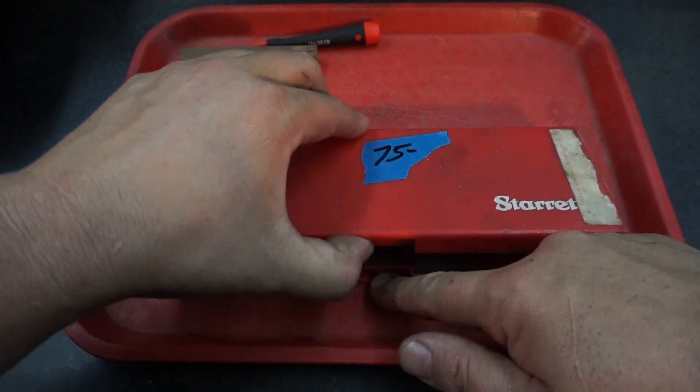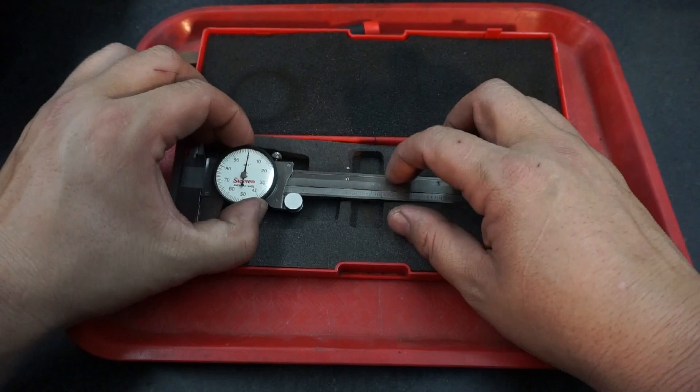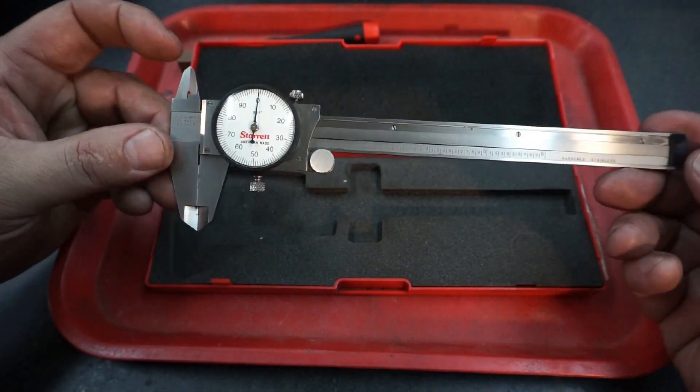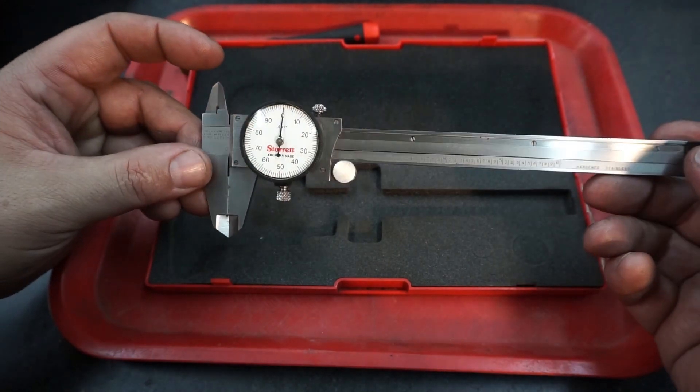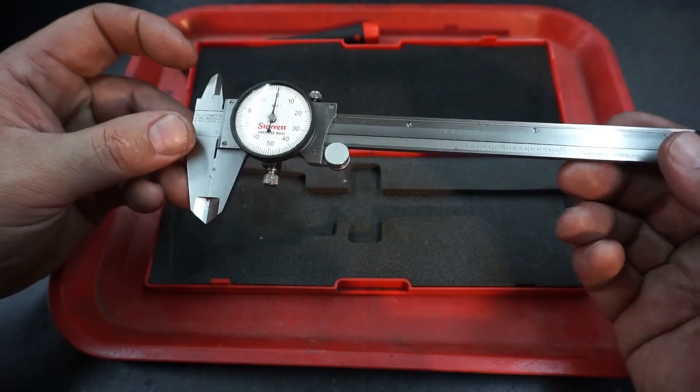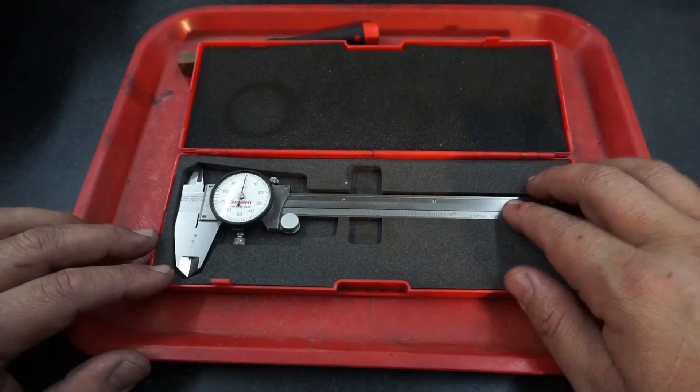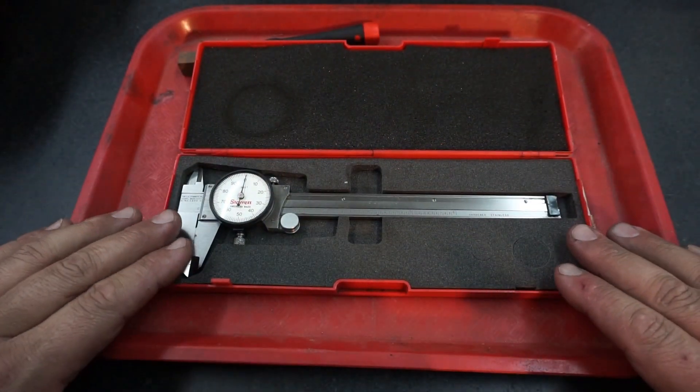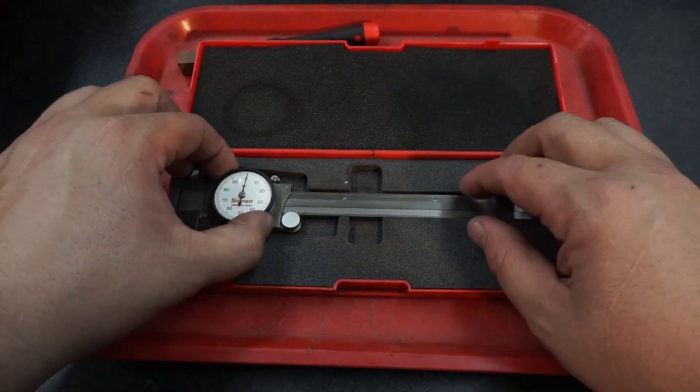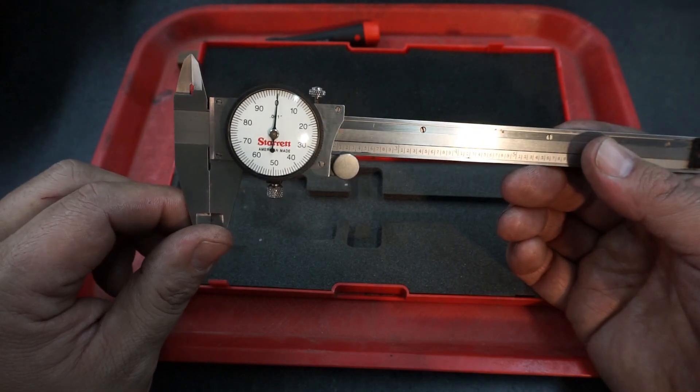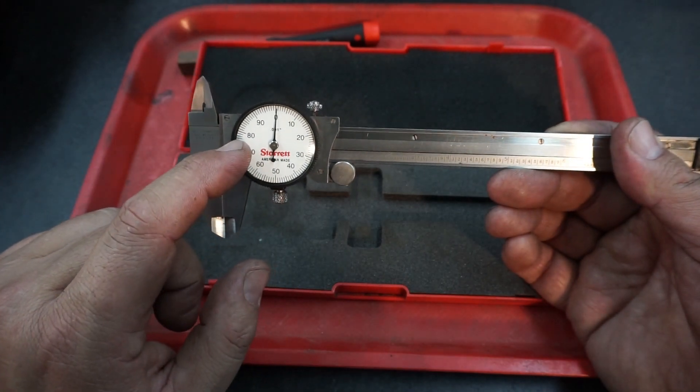And then here's the other thing - a Starrett number 120A six-inch dial caliper. These are the ones that are American made, very good quality dial caliper. The reason for this video is because when I bought these this morning, the needle was not clocked properly at 12 o'clock like they usually are. It was more over here towards the 80 on the dial.